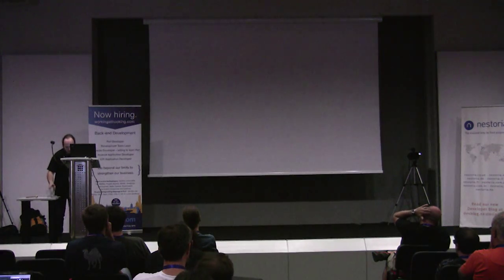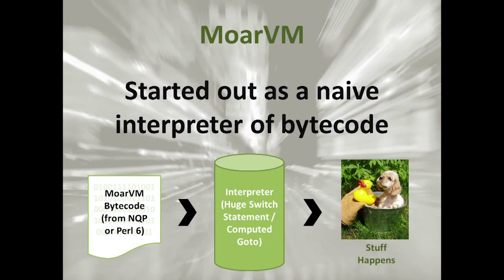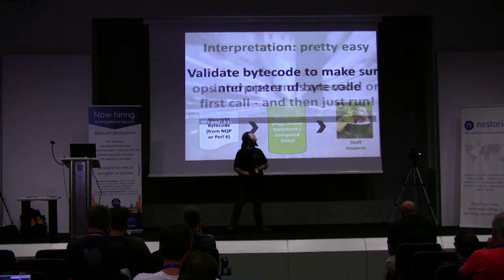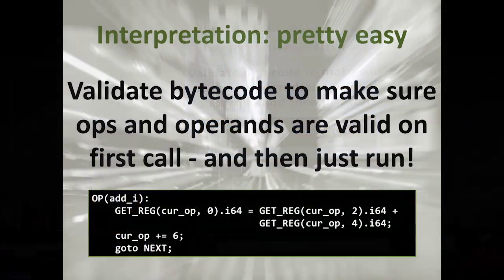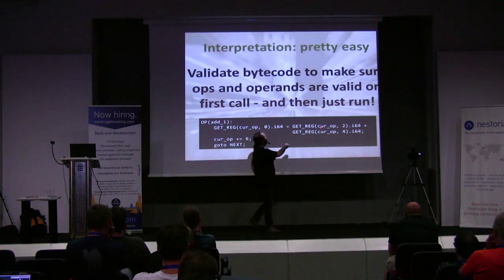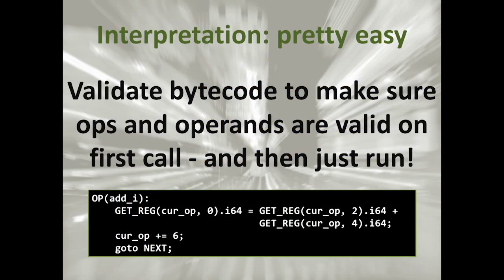Let's talk a bit about MoarVM. MoarVM started life, as most VMs do, as a naive interpreter of bytecode. We take a program in Perl 6, turn it into some kind of bytecode, feed it to the VM, and it just goes and sits in a big switch loop. Here's the native integer add instruction: get the two operands, add them together, and stick the result in the register. It's not really hard to write an interpreter like this — it's the first thing you do.